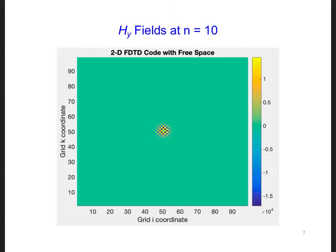This is what I got when I ran my code. There are two things to notice in this plot. First, the amplitudes of the HY fields are huge. There's 10 to the fourth power here.